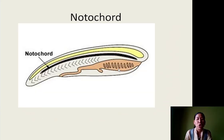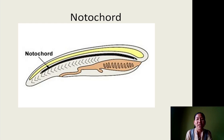Next is notochord. The notochord is a rod-shaped structure found during the embryonic stage at the dorsal part of the body. Based on whether the organism has a notochord or not, you can classify animals into groups: animals having notochords are categorized under Chordata, and those without a notochord are categorized under Non-chordata. These are the basis of classification in the animal kingdom.